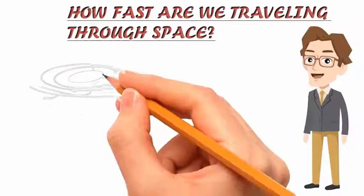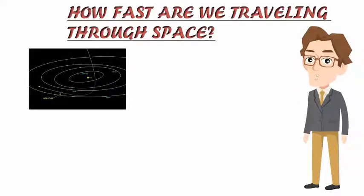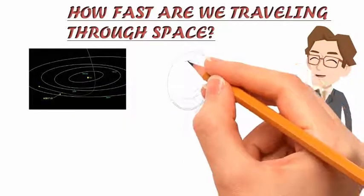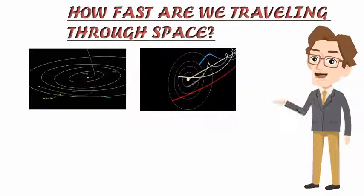But that is not all. The earth circles around the sun at about 107,000 km per hour. Our solar system is rotating around the Milky Way galaxy at about 700,000 km per hour.